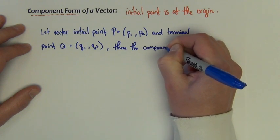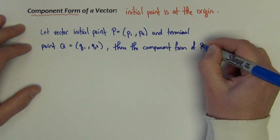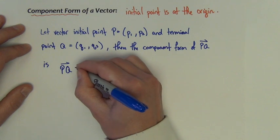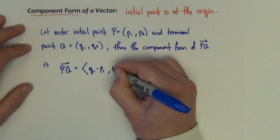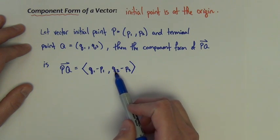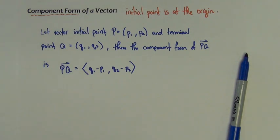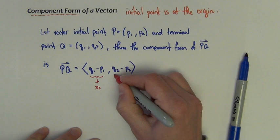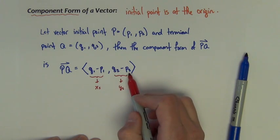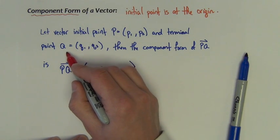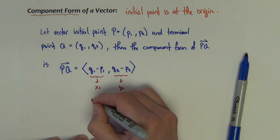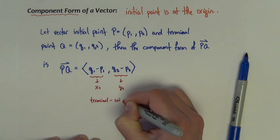How do we get a vector into this component form if it's not already given? If we let a vector's initial point P be equal to (P1, P2) and let its terminal point Q be equal to (Q1, Q2), then the component form of vector PQ is Q1 minus P1 comma Q2 minus P2. Essentially we've just subtracted the X's and subtracted the Y's. Notice that the order matters: terminal point minus initial point.